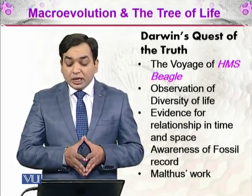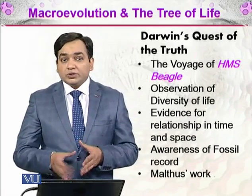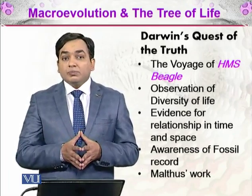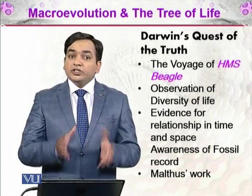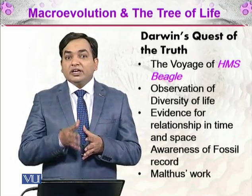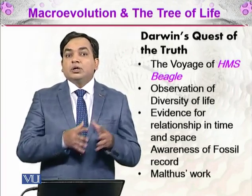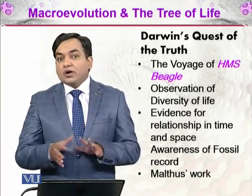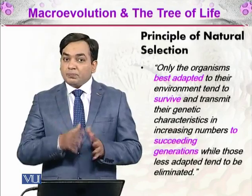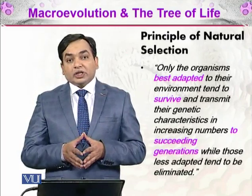Darwin was aware of the fossil record and studied many fossils. He was also influenced by the work of Thomas Malthus, an economist who worked on population. Malthus said that population grows but resources are limited, so only individuals who can better adapt to achieve those resources can survive — others will die. Based on all these things, Darwin devised his theory of natural selection.